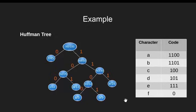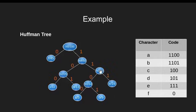This would be the codes for each character. Let's see how we obtained the code for node C. Here is C. We start from root, go to right, go to left, again left. So we have 1, 0 and 0. Let's generate for A. Here we have A. We start from root, go to right, again right, to left, to left. We have 1, 1, then 0 and 0. Similarly, we do for all the characters.